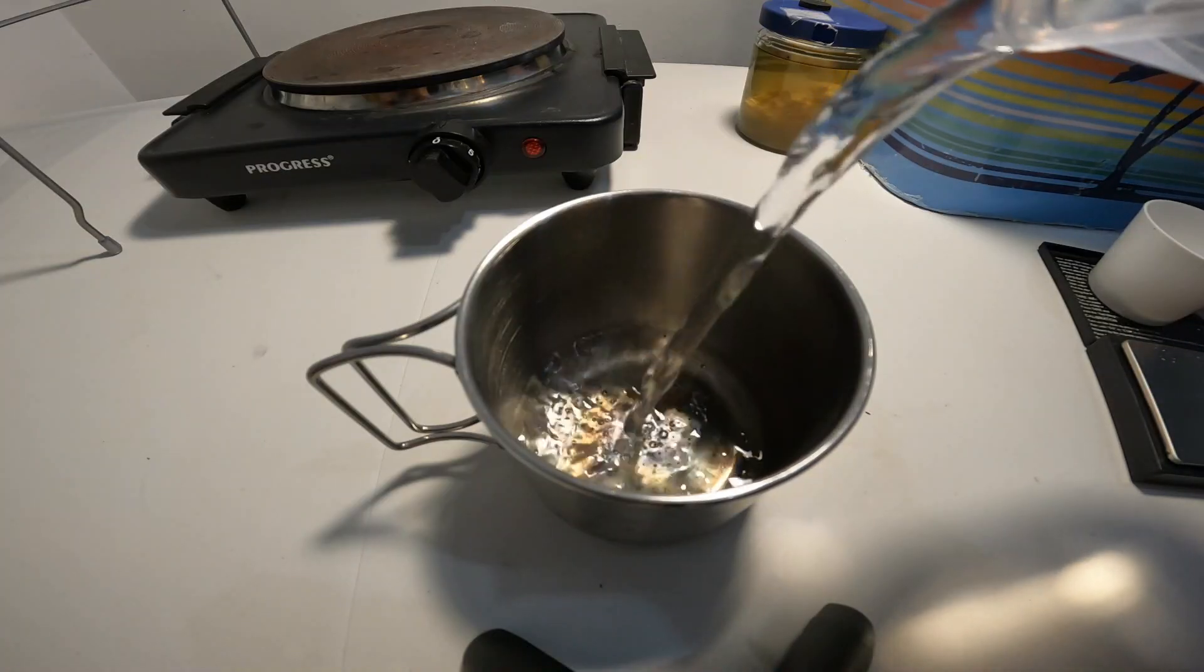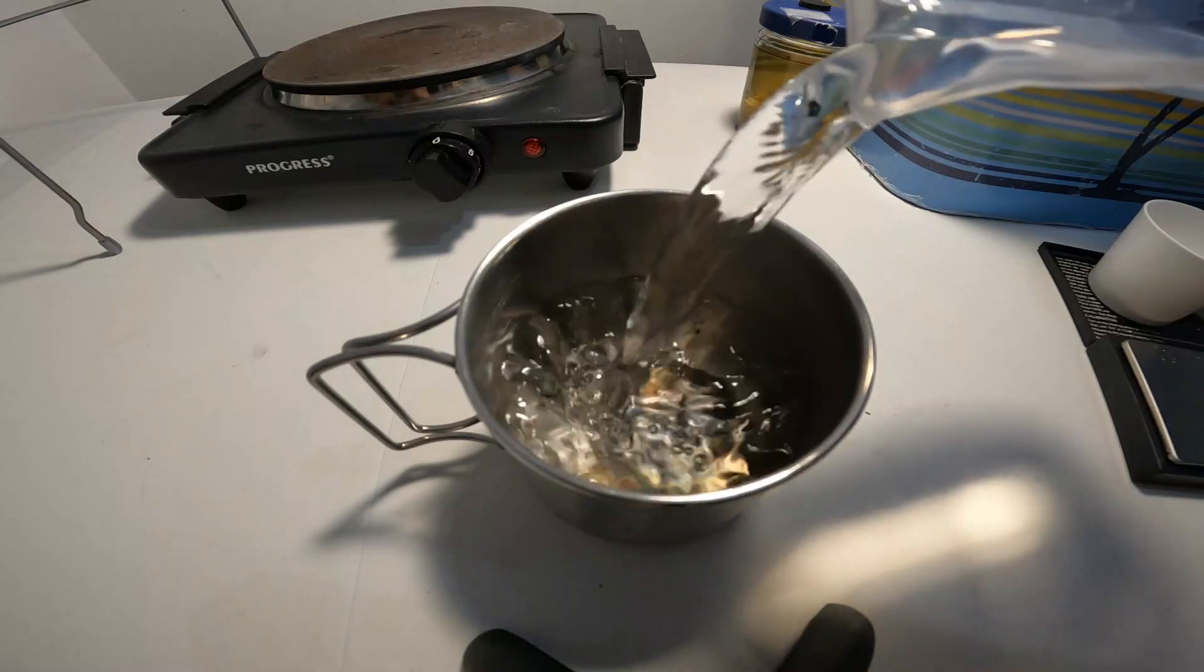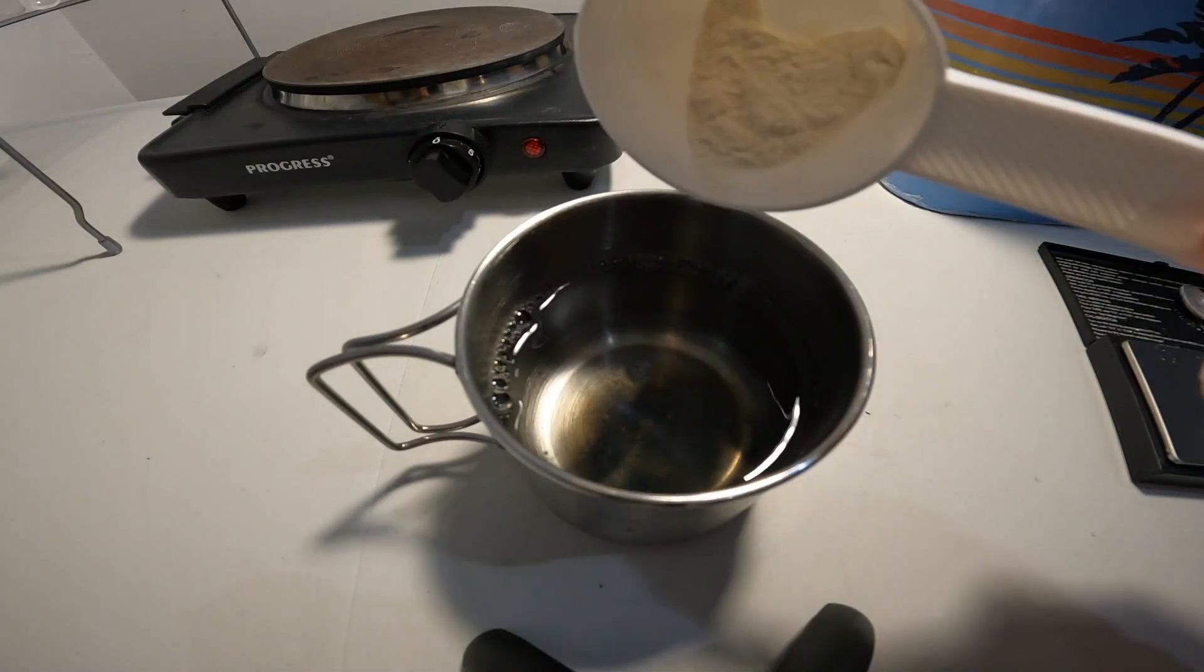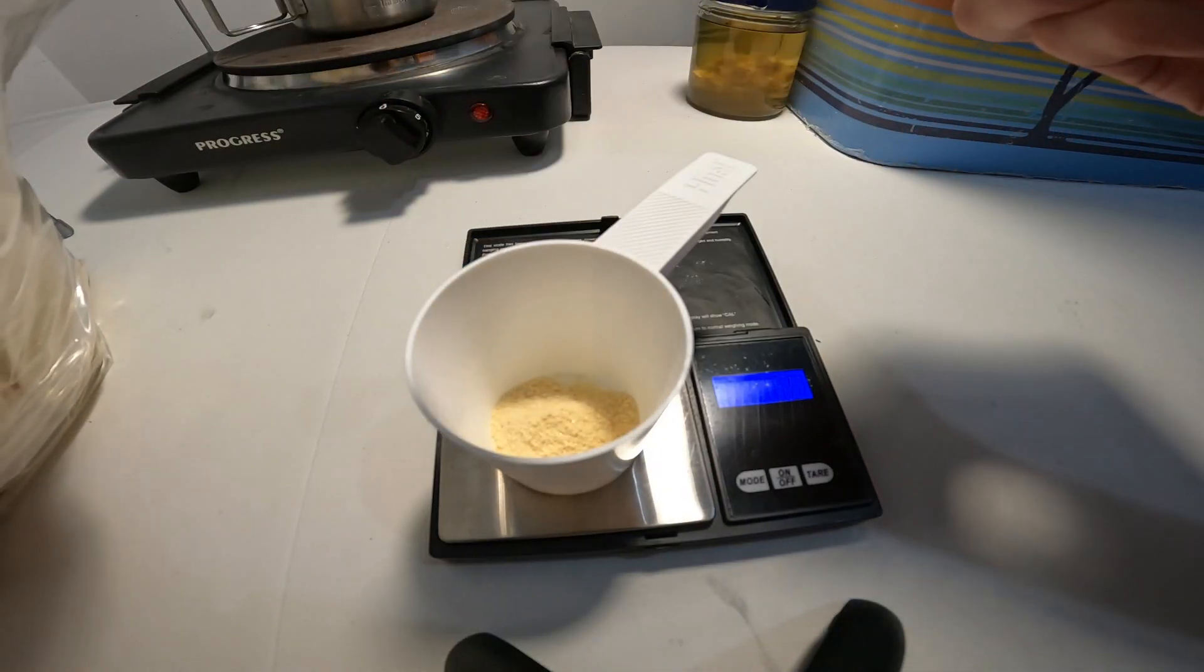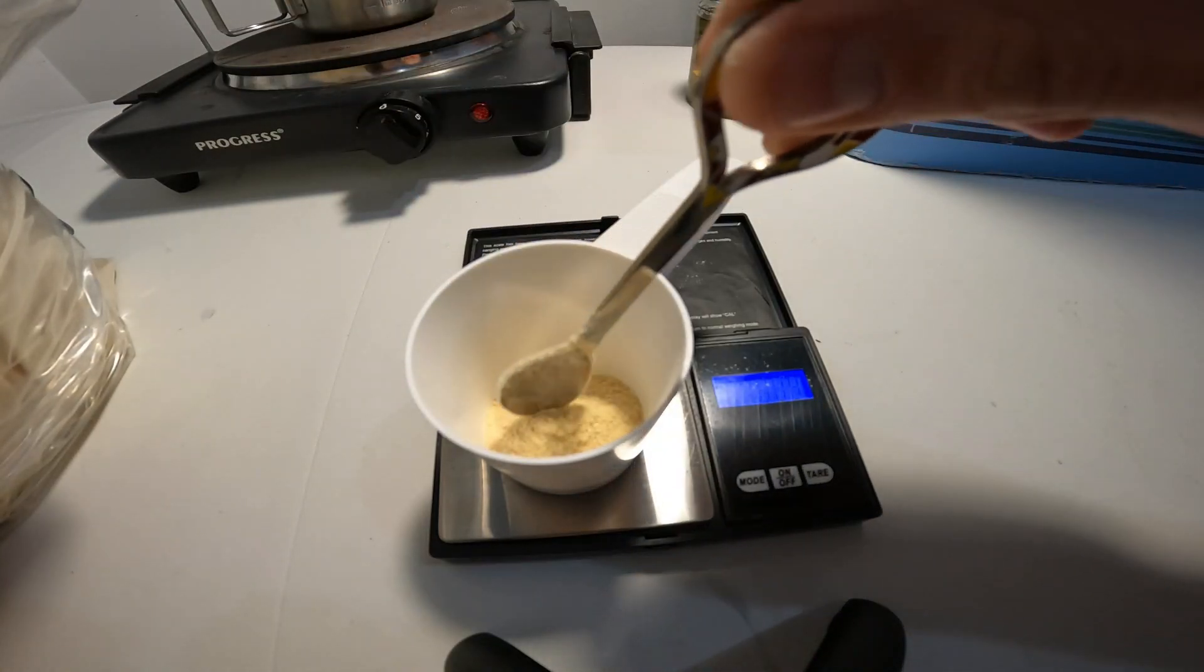This was then transferred to a stainless steel cup that I could use on the hob. I added the agar powder to the water, then measured out the light malt extract and also added that to the water.